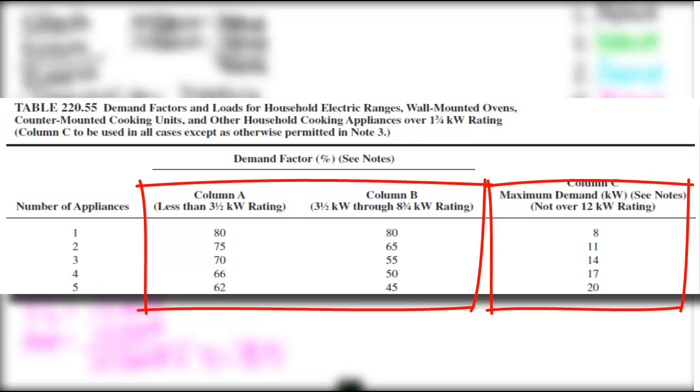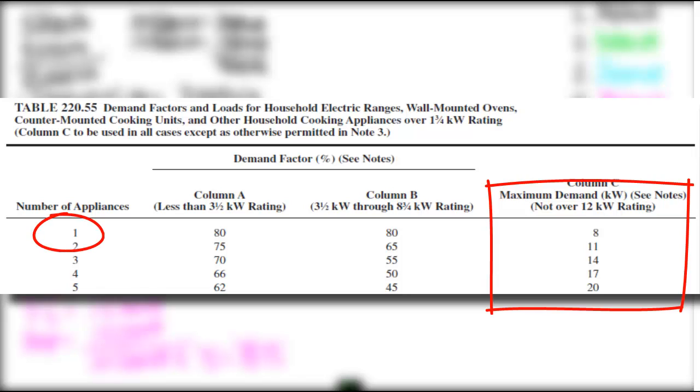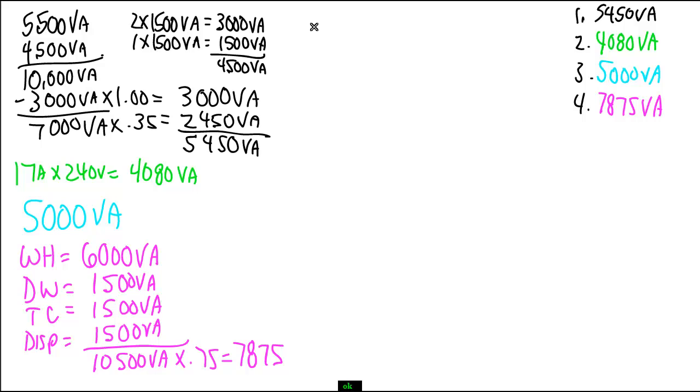So in this calculation, I'm going to have a 12 kilowatt or 10,000 watt range. If you look in column C, it shows us that if you have a piece of cooking equipment that is not over 12 kW, which I'm not over 12 kW, then I can use the demand factor that's right here. And if I look at the number of appliances, I have one, and I go all the way over to column C, I can see that I can use 8 kilowatts instead of the 12 kilowatts that I would normally use. So for number 5, I would have 12 kW, which really equals 8 kW.